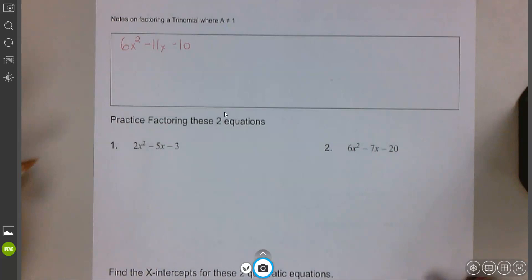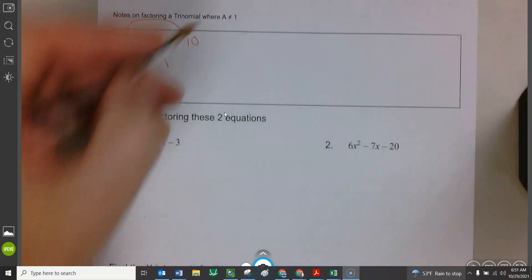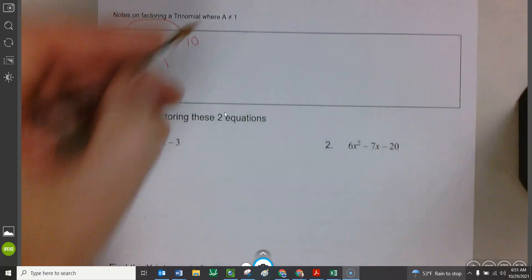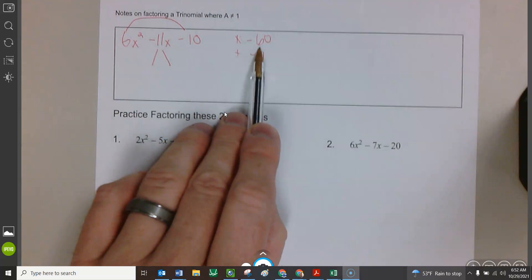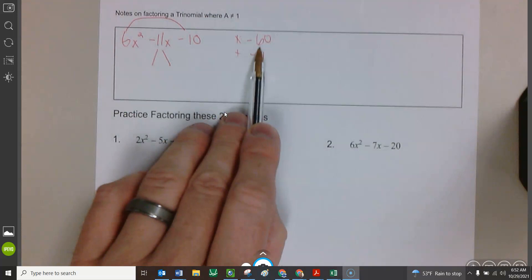So the rule will be I'm going to change this into two separate terms. I want two numbers, my two magical numbers, have to multiply and give me negative 60. And then the same two numbers that you pick over here, they're going to multiply and give us negative 60, have to add and get us negative 11. Okay, multiply to negative 60, add to negative 11, go find the numbers.